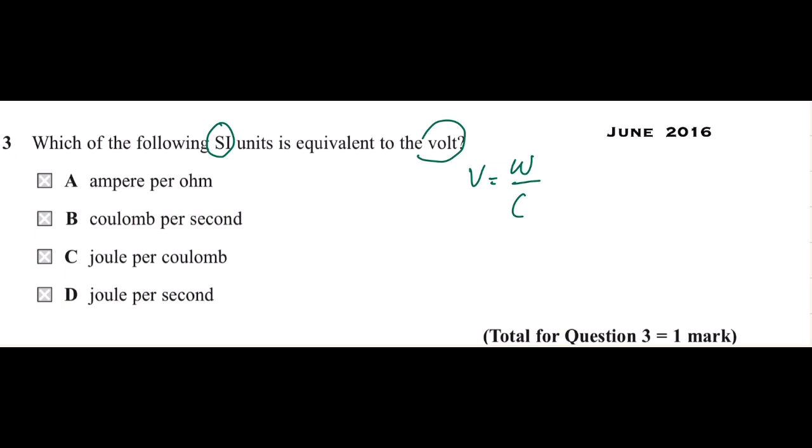There is one formula which is W over Q, for the energy transferred per unit of charge. So the unit for energy is joules, and Q is coulombs. So the correct answer, which is joule per coulomb, is C.